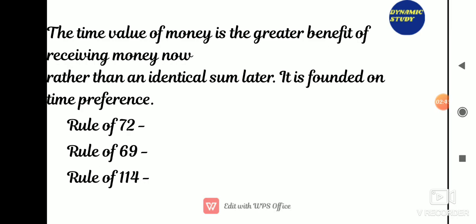Rule 72 is a simplified way to determine how long an investment will take to double given a fixed annual rate of interest. By dividing 72 by the annual rate of return, an investor can get a rough estimate of how many years it will take for the initial investment to duplicate itself. For instance, if the rate is 5%, then the doubling period is 72 divided by 5, that is 14.5 years. Basically, Rule 72 is used to measure the doubling period.